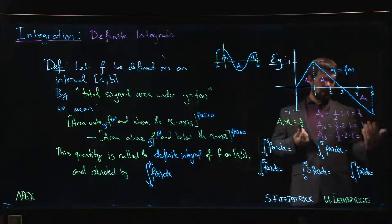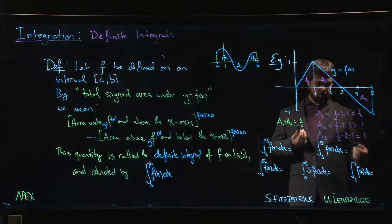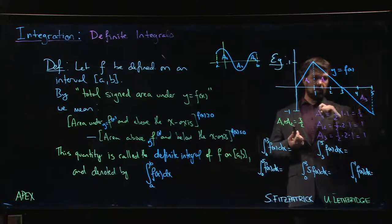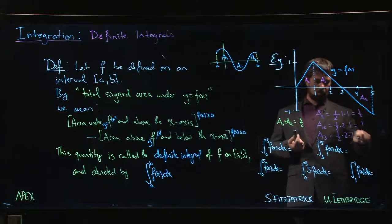This third area, I mean, as an area, areas should be stated as a positive quantity. We're not talking a signed area yet. This area is 1. Base 2 height 1, one half base times height gives us 1.